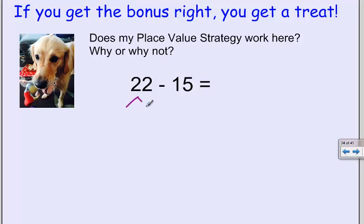So when I break it down by place value, 22 is made up of two tens and a two. 15 is made up of one ten and five ones. And if I do my subtraction of tens, that gives me ten ones. Here's my problem.